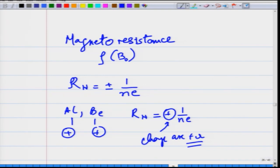How does the charge carrier become positive? In semiconductors like silicon, germanium, and gallium arsenide, depending on the doping or impurities introduced, the sign of R_H changes from positive to negative. None of these features can be explained by the Drude model.